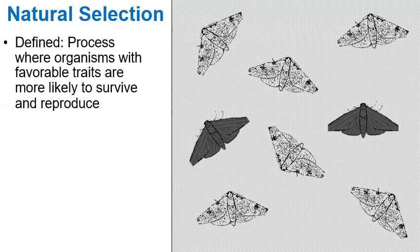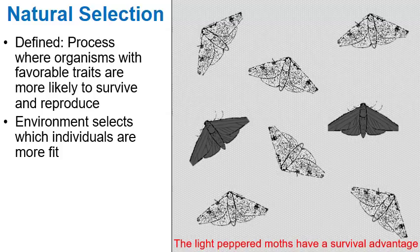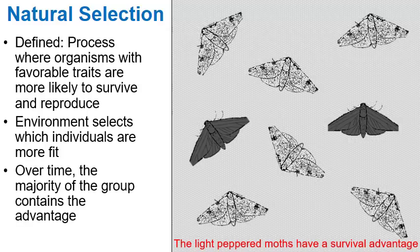Let's review natural selection — the process where organisms with favorable traits are more likely to survive and reproduce. Using the peppered moths as reference: right now the light-colored peppered moths have a survival advantage because they blend in better to the trees, so they're more common. The environment selects individuals that are more fit — in this case the light-colored moths are more fit than the dark-colored moths — and over time the majority of the population will be made up of members with the advantage.